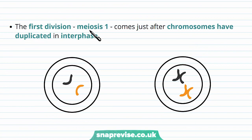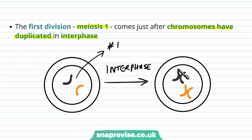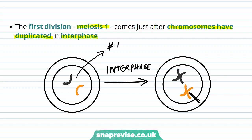The first division is known as meiosis 1, coming just after the chromosomes have copied themselves during the interphase stage. Representing chromosome pair number 1: during interphase the chromosomes copy themselves, so that each one of chromosome pair 1 now has a copy. If this one was from dad and this one was from mum, we now have a copy of the one from dad and a copy of the one from mum — so there are now four chromosomes of type 1, all exactly identical to each other.